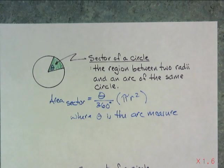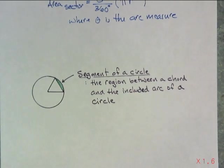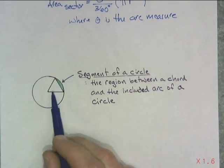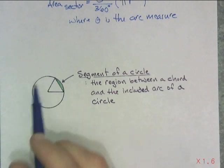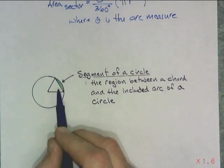The other S word for parts of a circle is a segment of a circle. And that's the region between a chord and the included arc of a circle. So now it's not the whole piece of pizza, but just the stuffed crust that you like. You're going to cut it off like that.